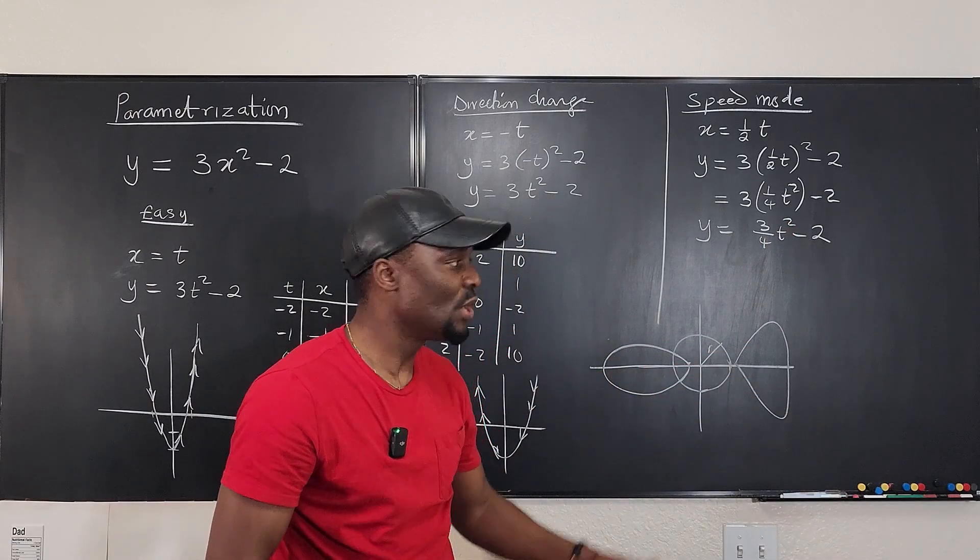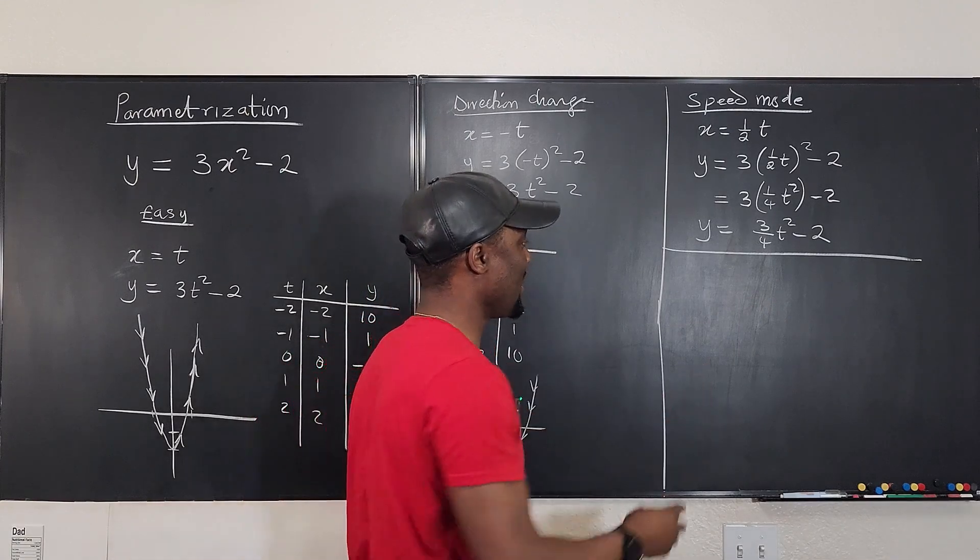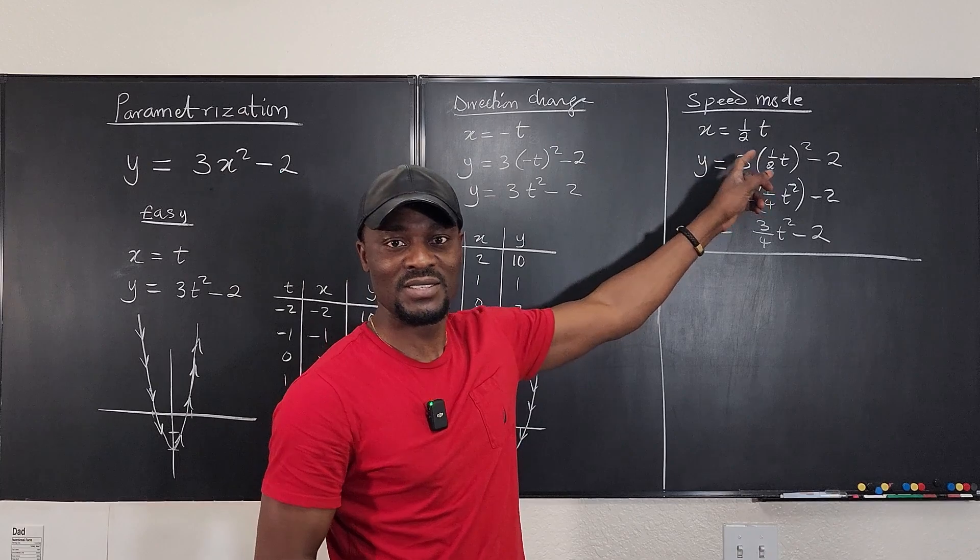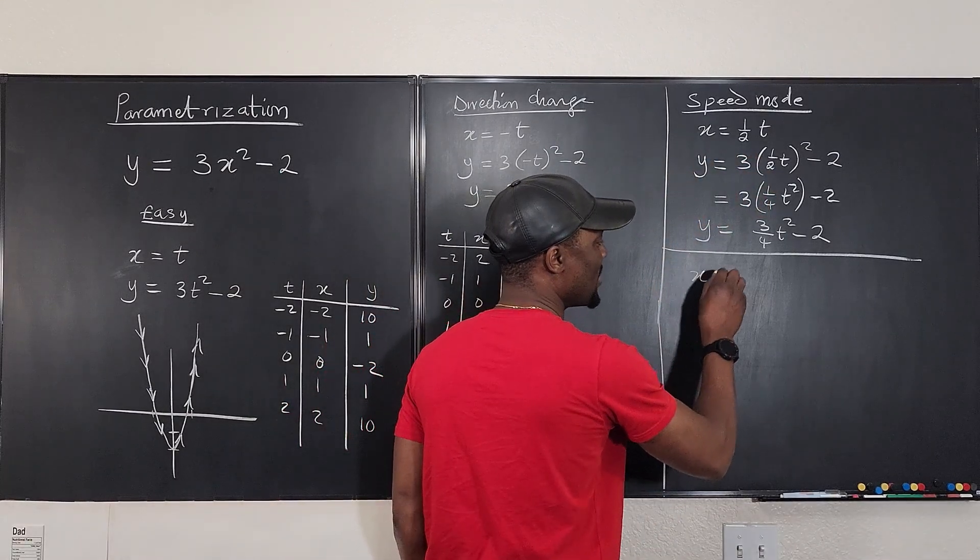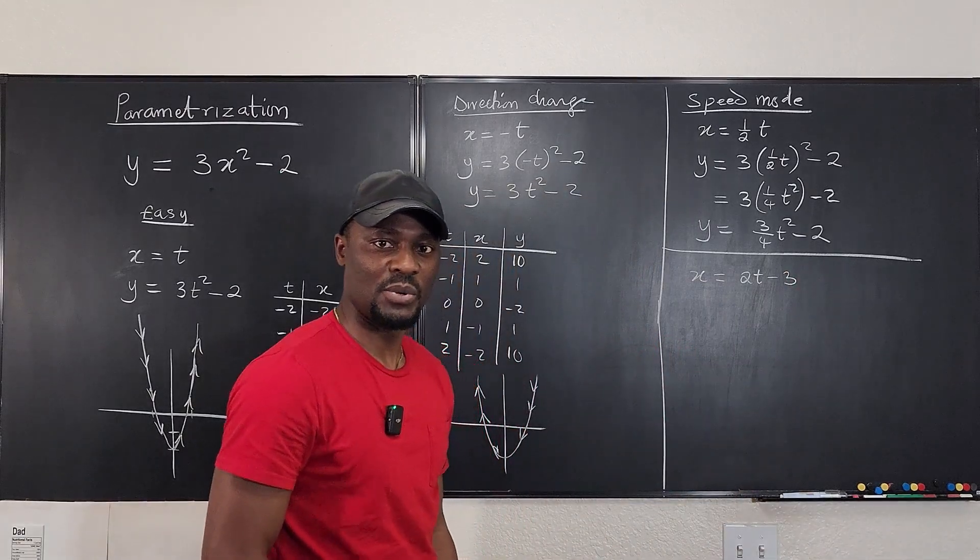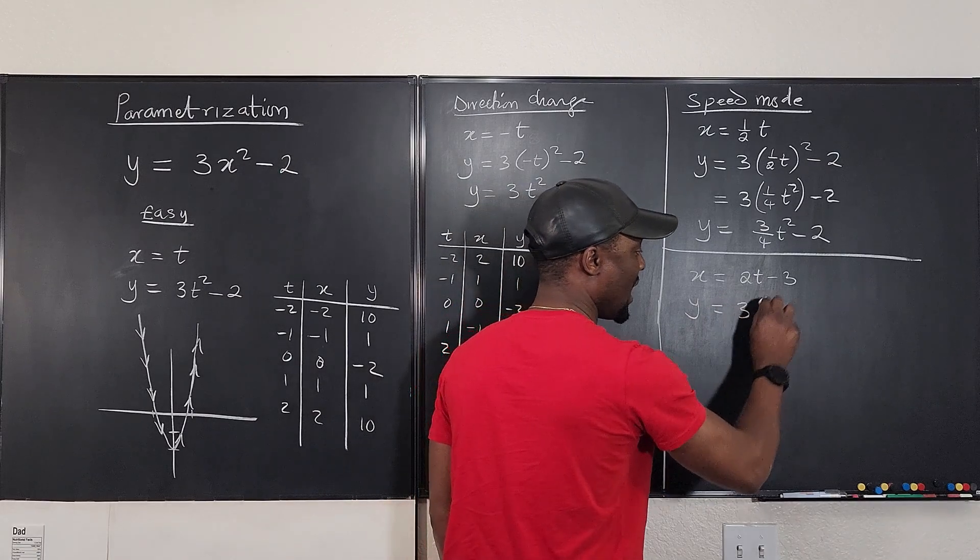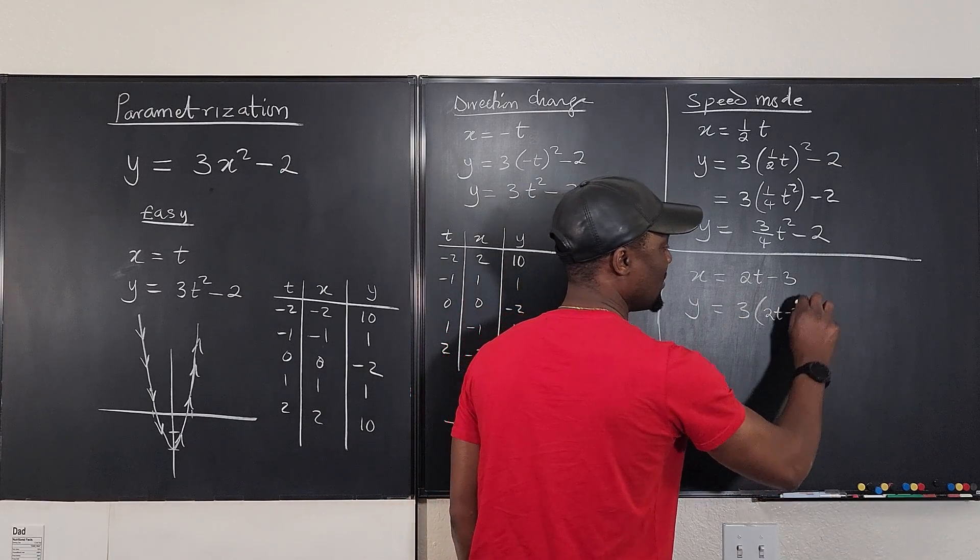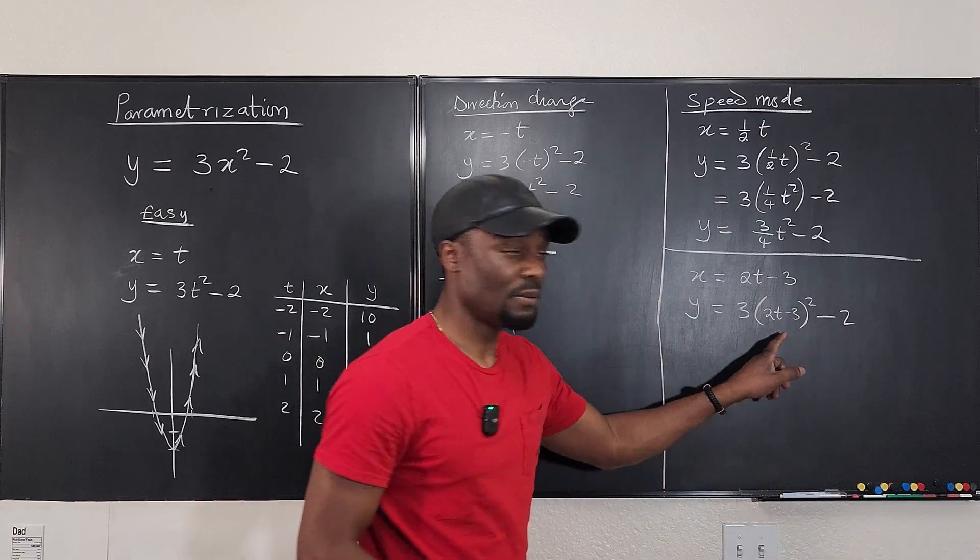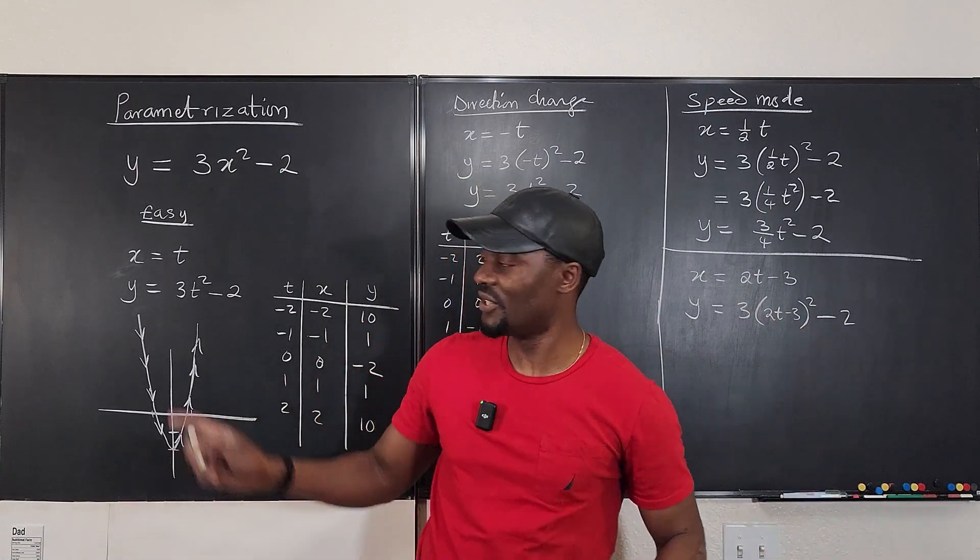And then you can make a table. You're going to get another answer. So let's say you want to get more sophisticated for any reason. You just don't want to do the boring thing of just writing this. And you want to go, you know what, I'm going to say x equals 2t minus 3, for example. Then it means that when you parameterize this, you're going to get y equals 3 times 2t minus 3 all squared minus 2.